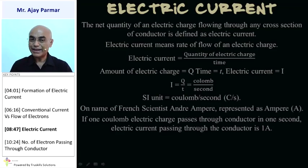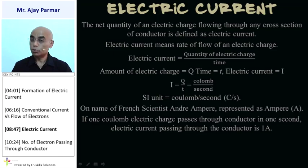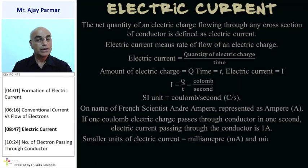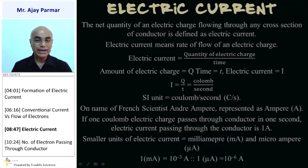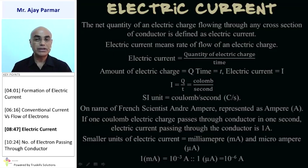If one Coulomb of electric charge passes through the cross-section of a conductor in one second, then the electric current through that conductor is considered to be 1 Ampere. There are smaller units of electric current like milliampere and microampere, where 1 milliampere = 10⁻³ Ampere (i.e., 1/1000 Ampere), and 1 microampere = 10⁻⁶ Ampere (i.e., 1/1,000,000 Ampere).